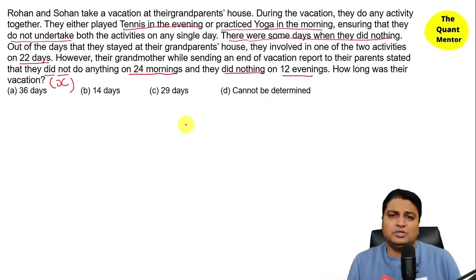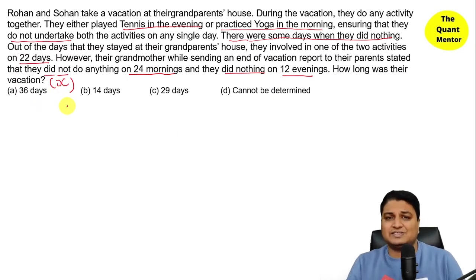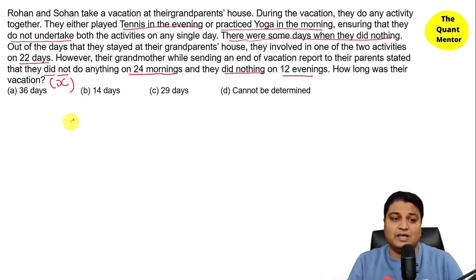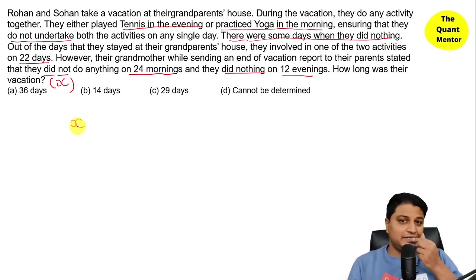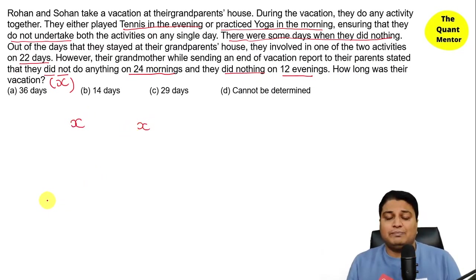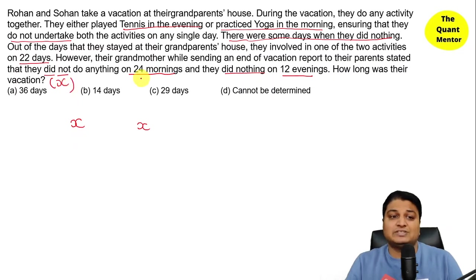It is a very easy question — it just seems confusing. Let's say the total vacation was X days. If they stayed for X days, then there will be X mornings and X evenings. If 24 mornings they did nothing, then the mornings they did yoga equals X minus 24. Similarly, evenings they played tennis equals X minus 12.